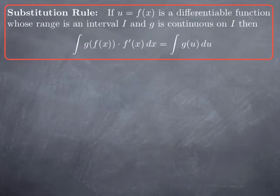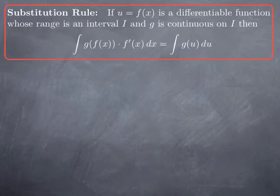In general, for this method to work we need some basic assumptions. If we want to integrate something of the form g of f of x times f prime, we set u equal to f of x, then du equals f prime of x dx, and we obtain a new integral of the form g of u du that is hopefully easier to handle. The basic assumptions are that f of x is differentiable, has a range that is an interval, and g is at least continuous on that interval — that is, on the range of f.